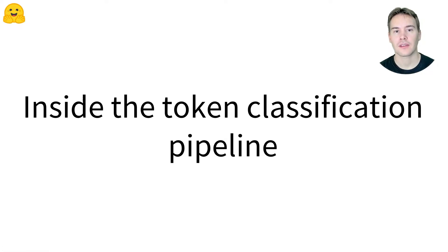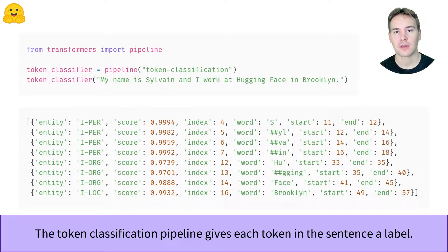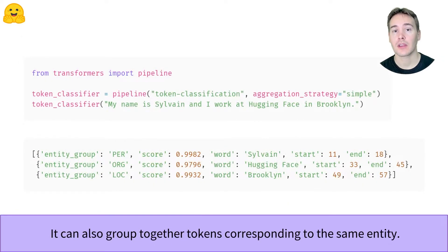Let's have a look inside the token classification pipeline. In the pipeline video, we looked at the different applications the Transformers library supports out of the box, one of them being token classification. For instance, predicting for each word in a sentence whether they correspond to a person, an organization, or location. We can even group together the tokens corresponding to the same entity, for instance all the tokens that form the word Sylvain here, or Hugging and Face.